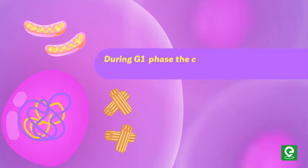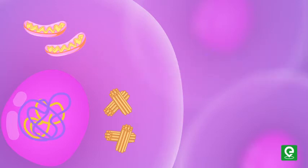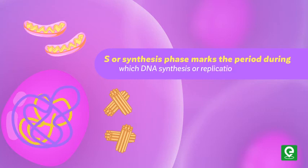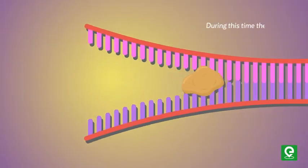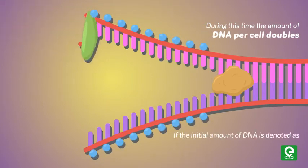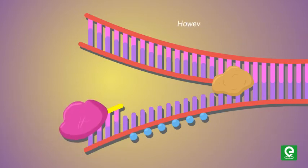During G1 phase, the cell is metabolically active and continuously grows but does not replicate its DNA. S or synthesis phase marks the period during which DNA synthesis or replication takes place. During this time, the amount of DNA per cell doubles. If the initial amount of DNA is denoted as 2C, then it increases to 4C. However, there is no increase in the chromosome number.